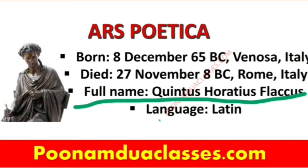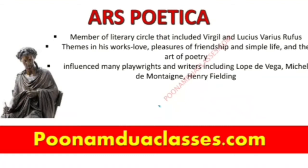The writer's full name is Quintus Horatius Flaccus, known in the English-speaking world simply as Horace. He was a leading Roman lyric poet during the time of Augustus, born 65 BC in Italy and died 8 BC in Italy. This text was written around 19 BC in the original language Latin.